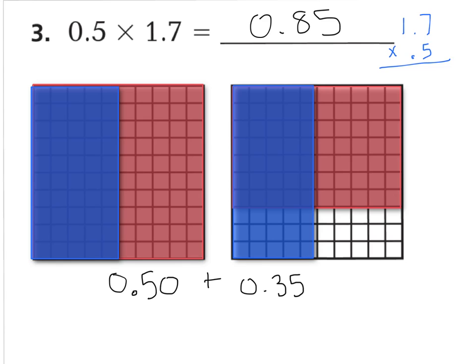I wrote the equation up here to quickly walk you through: 5 times 7 is 35, and 5 times 1 is 5 plus 3 is 8. Remember, we have 2 spots to the right of the decimal, so I need 2 spots there. Do you see why we have 85 hundredths? The model shows why. Let's go on to the next question.